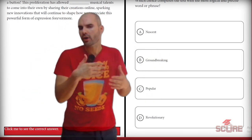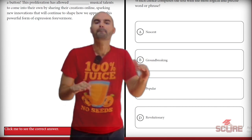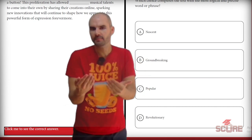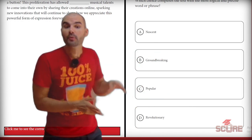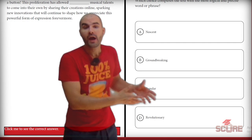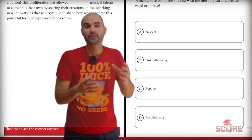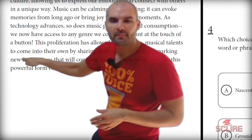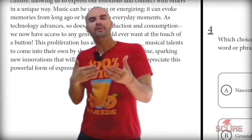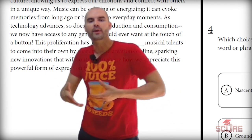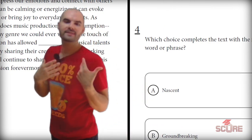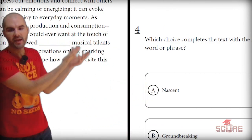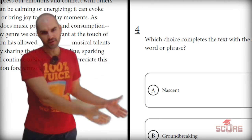Groundbreaking and revolutionary are basically synonyms. So I can rule them both out because again, if one can be right, then the other could be right. And we can never have two correct answers on the SAT. So between nascent and popular, I can take a look at the context. When it says to come into their own, that implies that they're relatively new and that they're still discovering their style. So they would be nascent talents, ones that have just emerged onto the scene. And so I can mark A and move on.